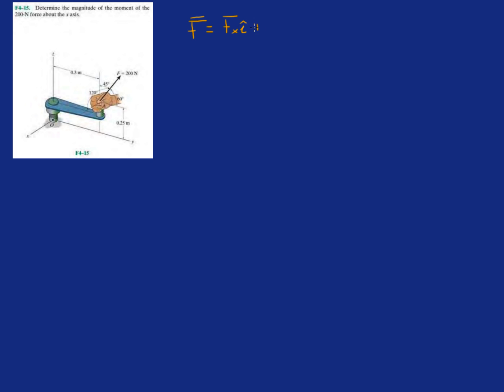They give you the magnitude of the force; they don't give it to you in component form. So the first thing we want to do is compute the force in Cartesian vector form. We want the x component, the y component, and the z component. They give you all the angles — the principal angles, I believe they're called.